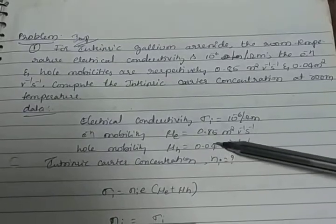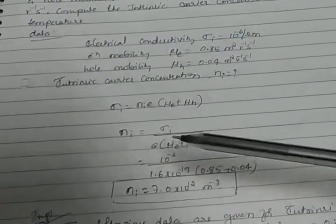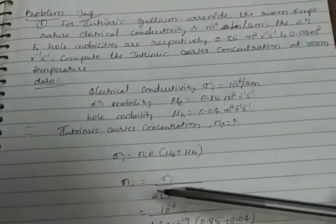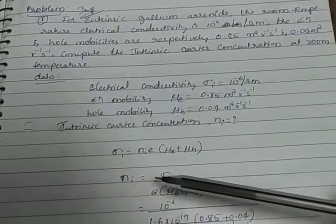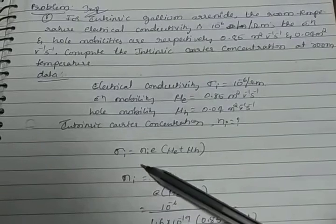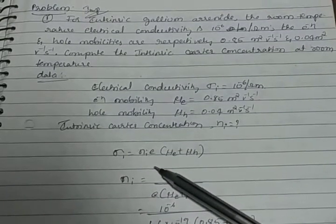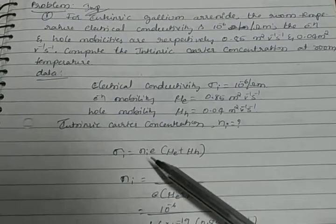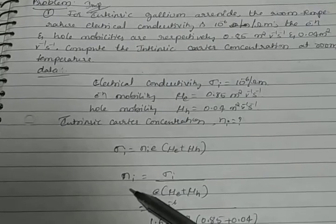Next, calculate intrinsic concentration. Sigma_i equals Ni times e times (mu_e plus mu_h). Here Ni is the intrinsic carriers.